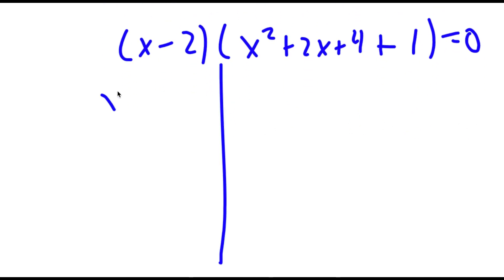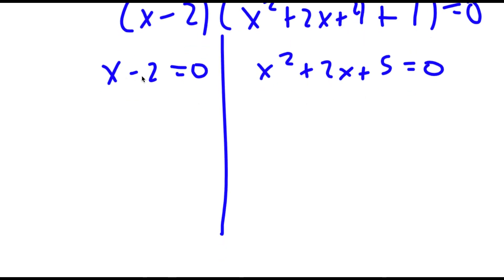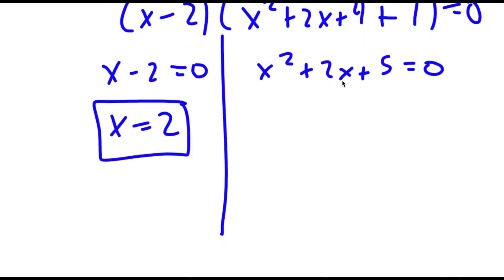Now I have x minus 2 is equal to 0, and x squared plus 2x plus 5 is equal to 0. So for x minus 2 equals 0, x is obviously equal to 2. So that's one solution.